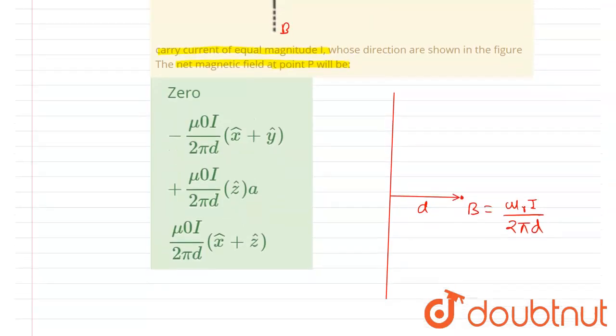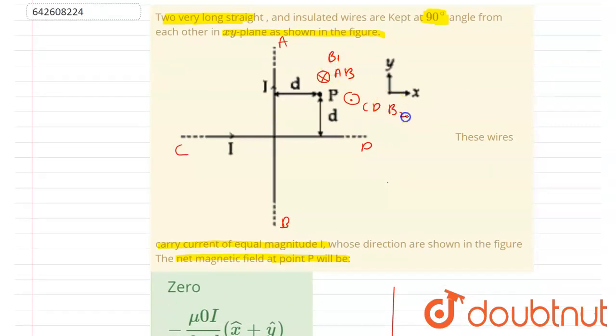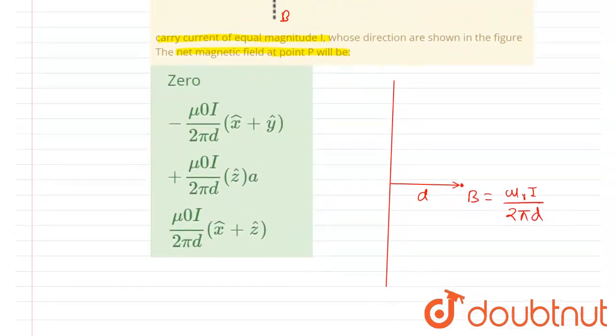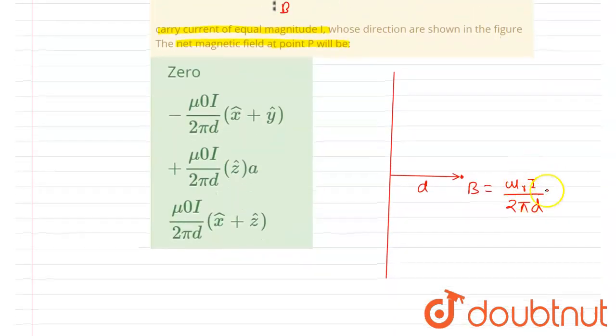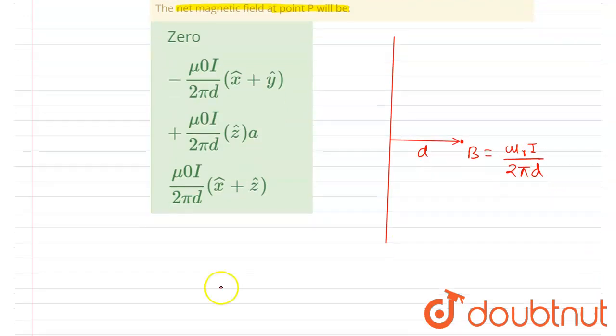If I talk about the magnetic field because of the AB wire is B₁ and because of the CD wire is B₂, you can see both wires are carrying the same current and the perpendicular distance of point P from the two wires is d only. So the magnitude because of AB wire equals to magnitude of the magnetic field because of the CD wire equals to μ₀I/(2πd).